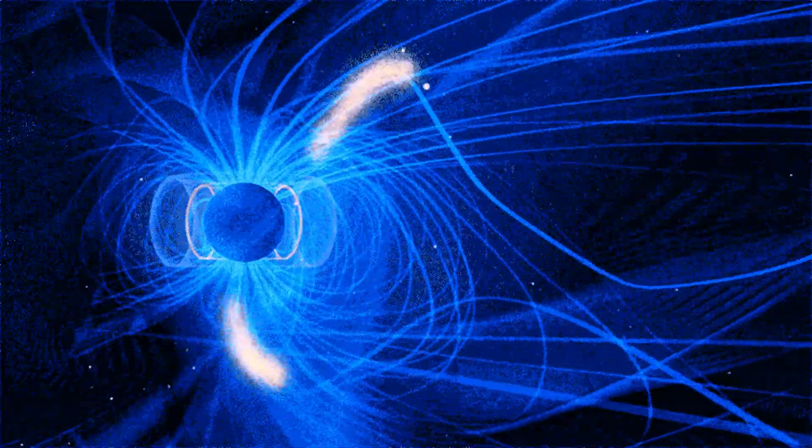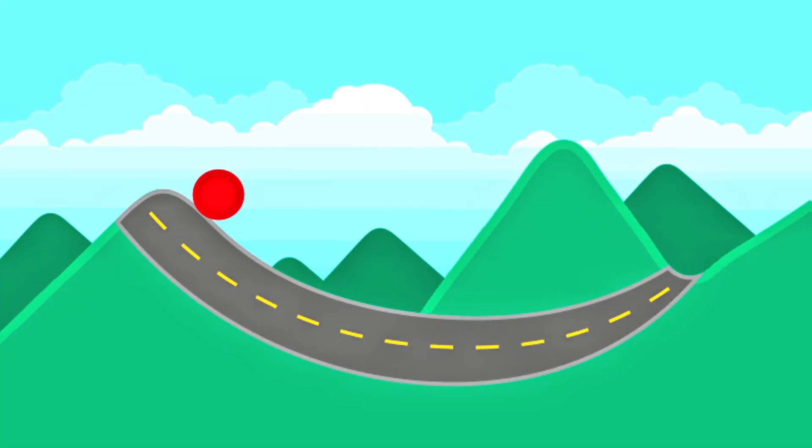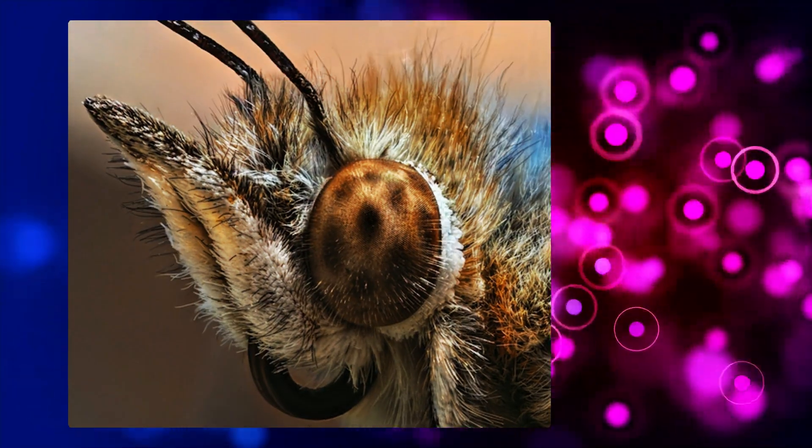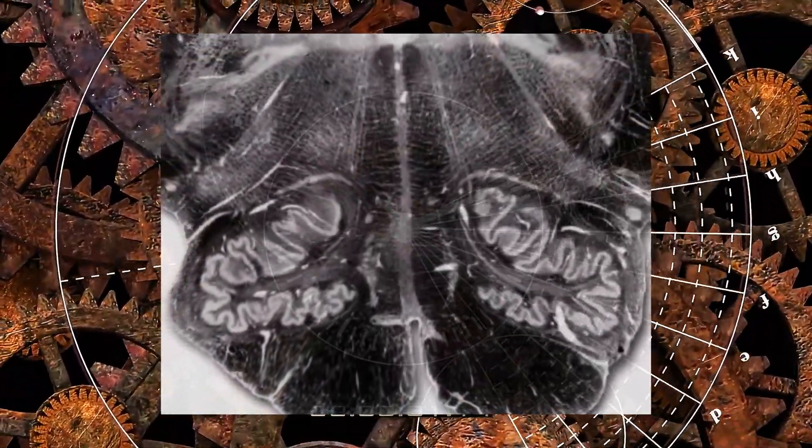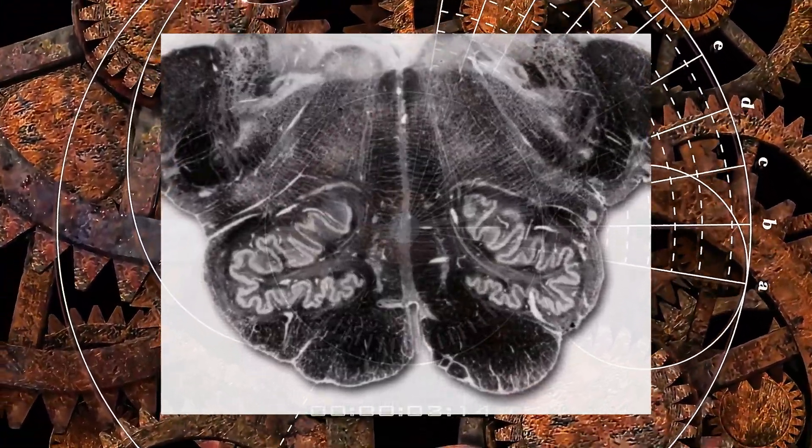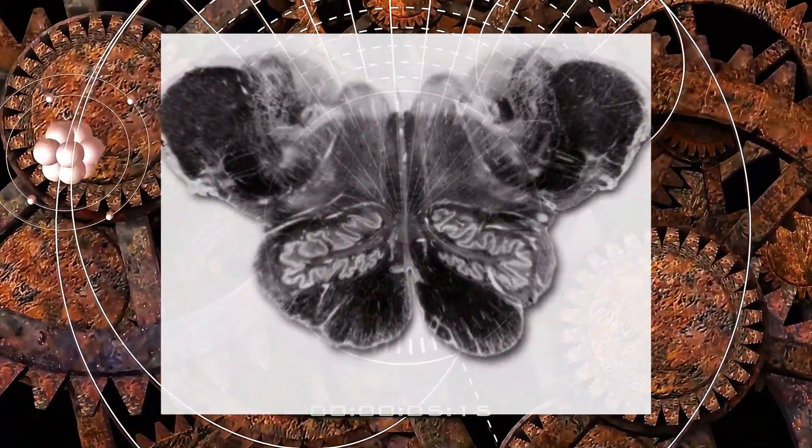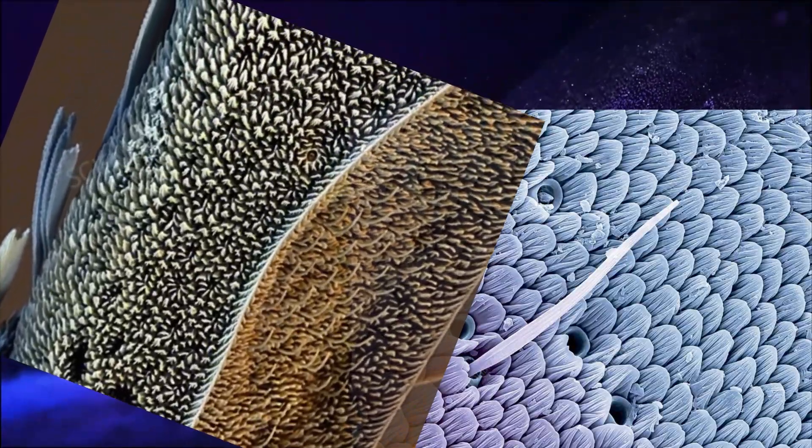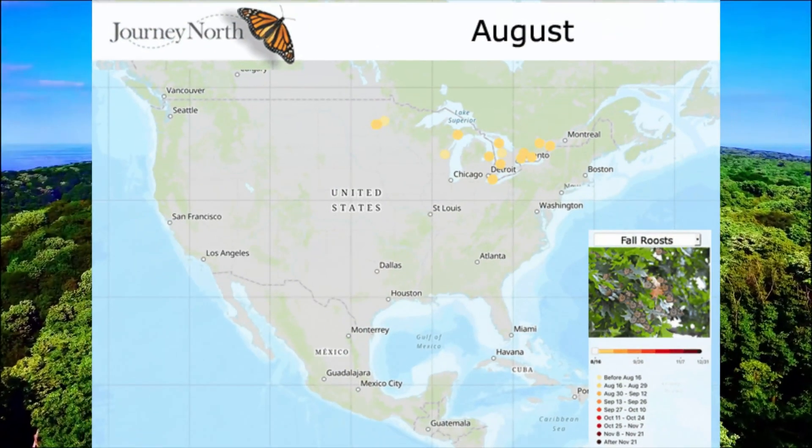This process involves electron pairs falling back to their ground state in a way that emits signals to the butterfly's brain about its orientation relative to the Earth's magnetic field. This quantum sensing mechanism, called magnetoreception, is vital for their navigation over thousands of miles.